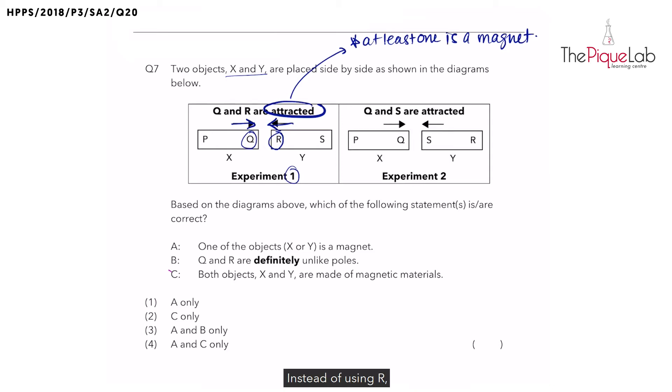So what happened in the second experiment? Instead of using R, we use S, which is the other end of object Y. And when we bring the two objects close to each other, what happened? Yes, they have again attracted. Now what can we conclude about the other material? Now is it a magnet? No, it is a magnetic material.